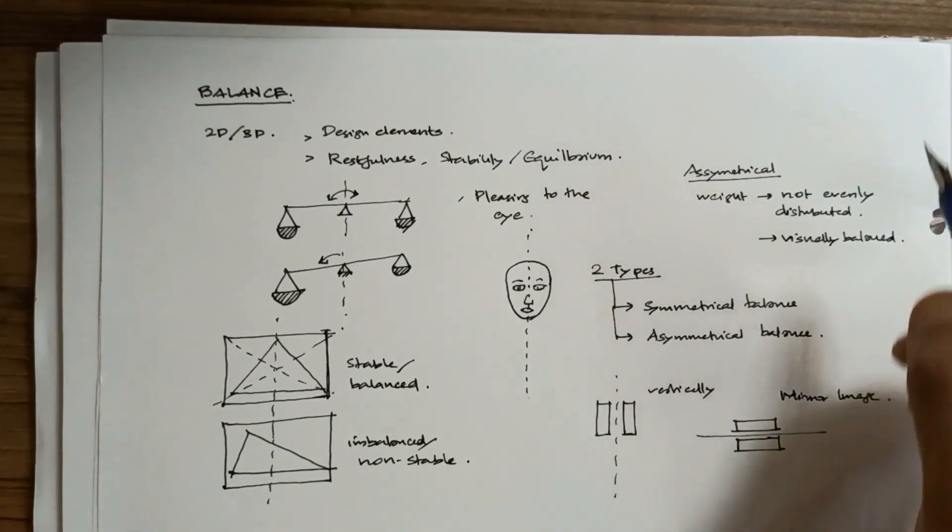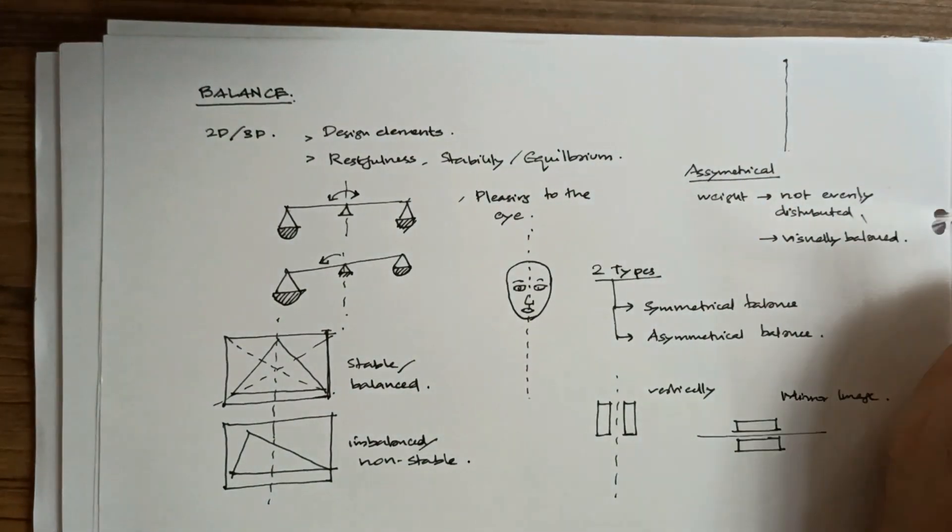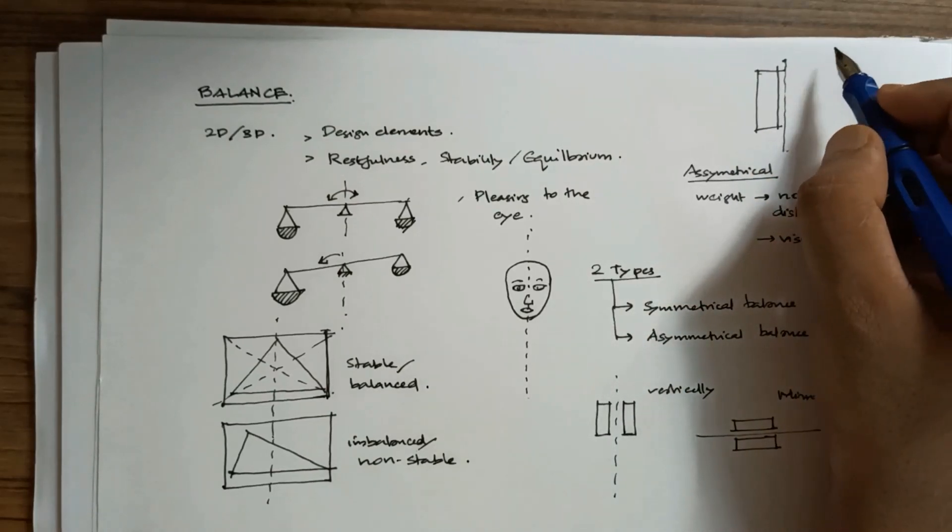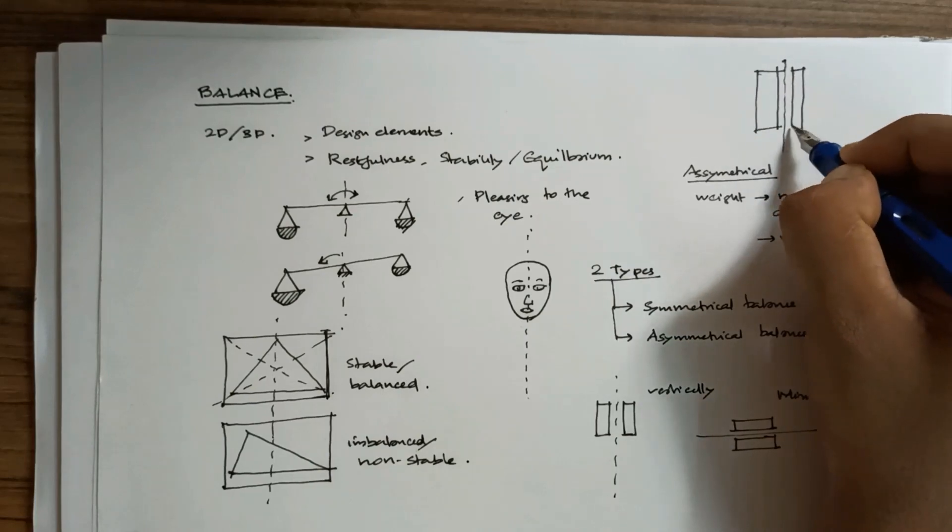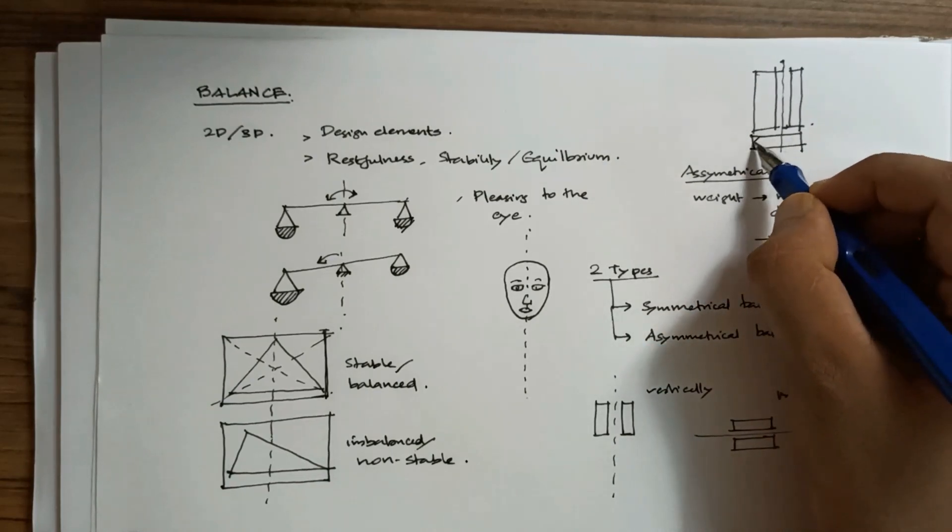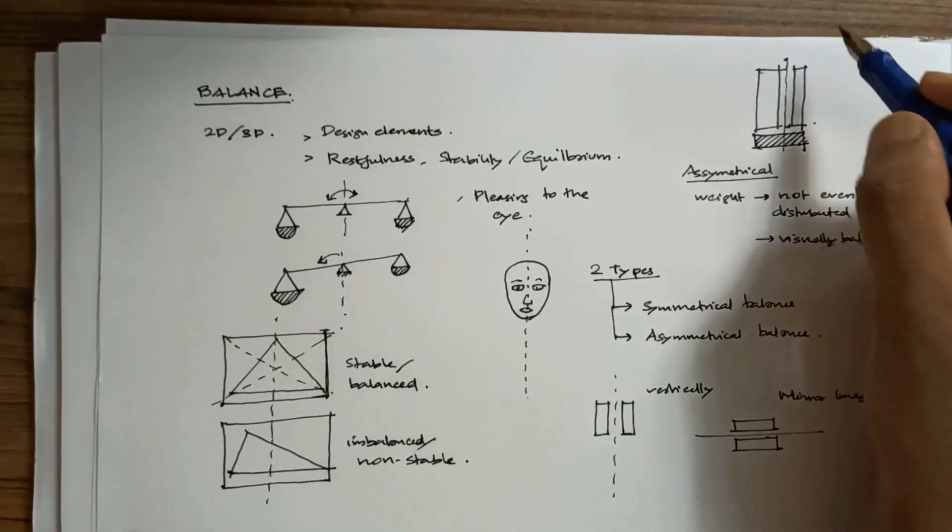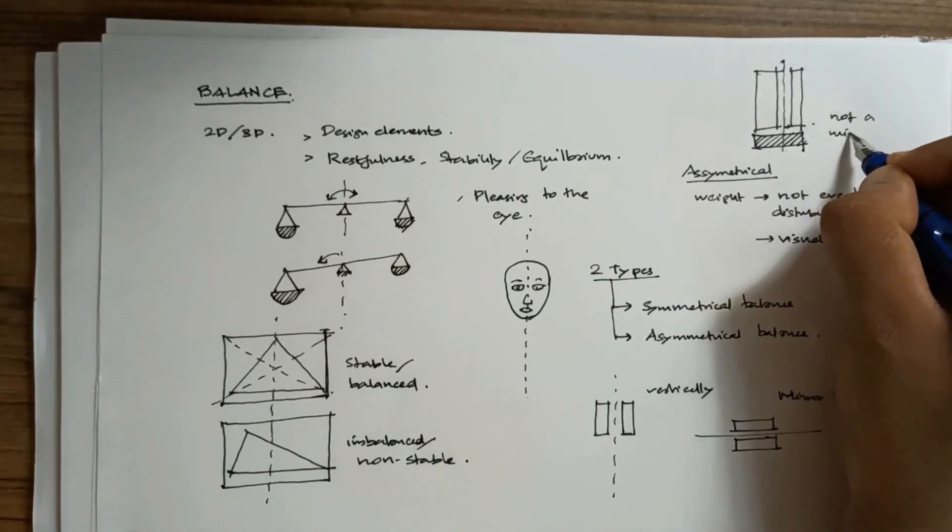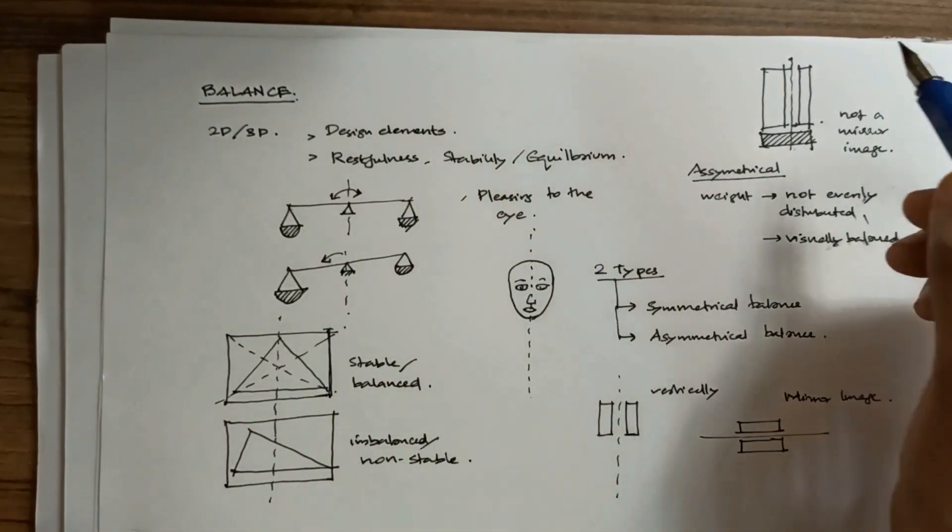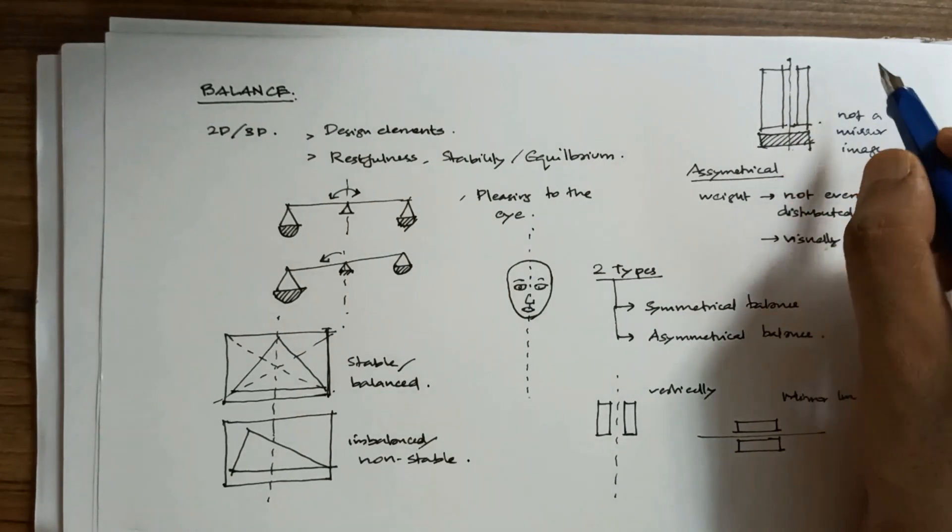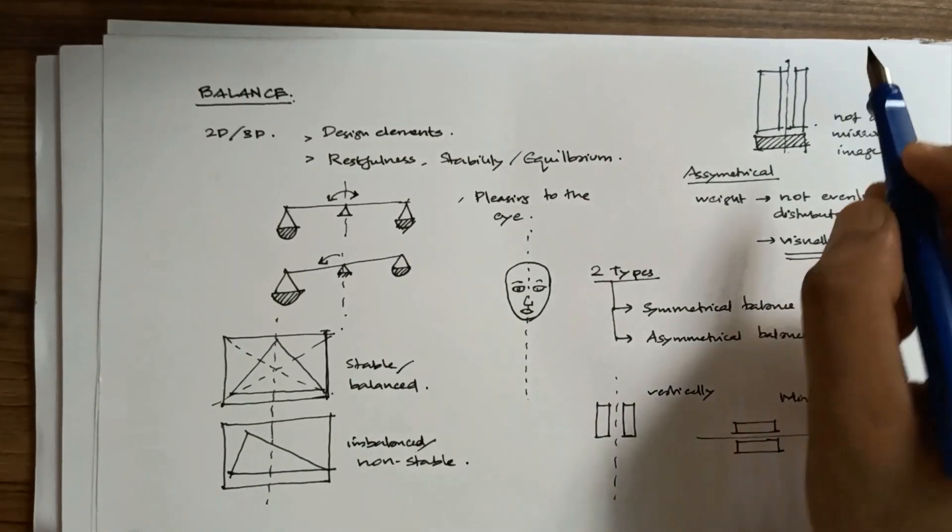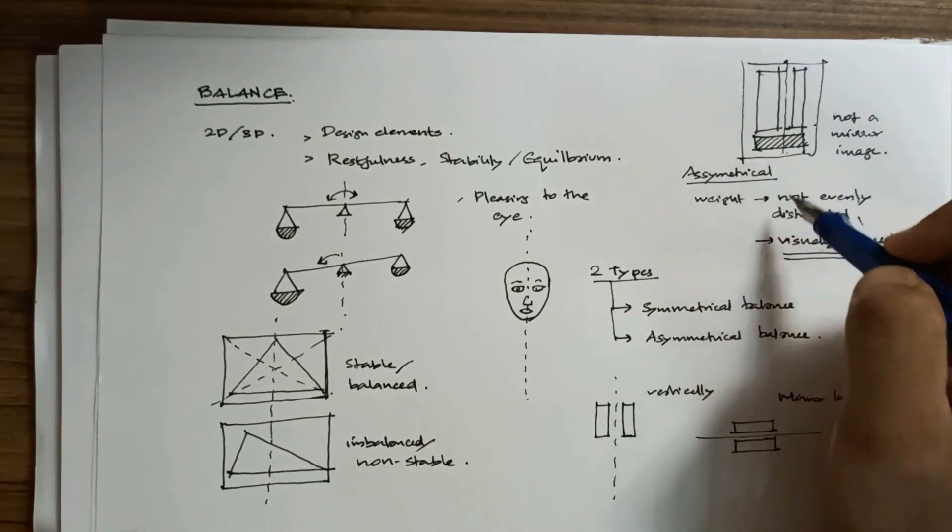But still it will look visually balanced. Imagine I am taking an axis like this. If I have something on one side and something lesser on the other, the overall weight I am balancing by providing something here. As a whole, the composition looks balanced, although it is not a mirror image. The basic idea is that asymmetrical balance would not be visually symmetrical, but it will have a sense of visual balance.